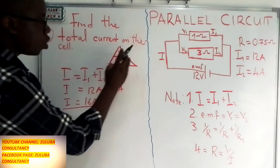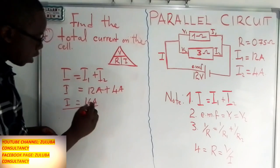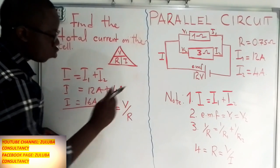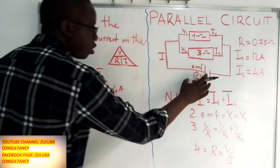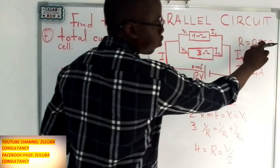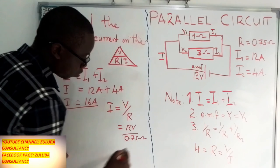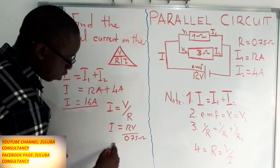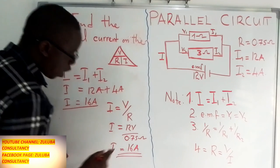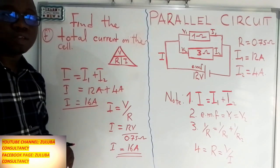The second option is using Ohm's law: current equals voltage divided by resistance. Using the total voltage of 12 volts and the total resistance of 0.75 ohms, dividing 12 by 0.75 again gives 16 amps. So whether you use equation 1 or Ohm's law, you get the same answer: 16 amps.